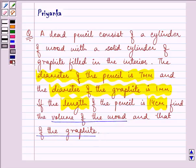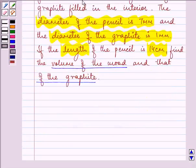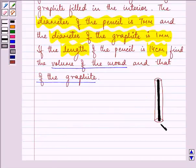Now let us understand this question. This is a wooden pencil having a cylinder of graphite filled in the interior.